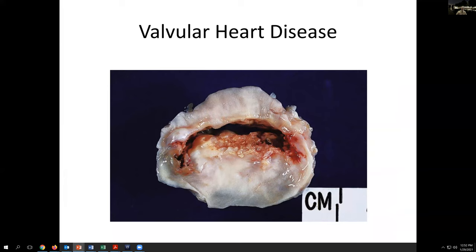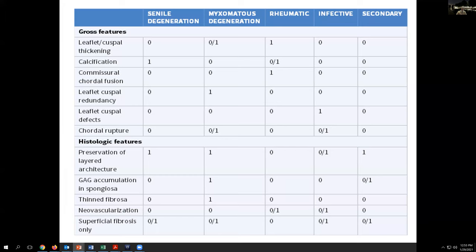Moving on to valvular heart disease — this is a disorder that will frequently cross our surgical bench as cardiac surgery progresses. When describing valve lesions, the major differential includes aging degenerative atherosclerotic change, myxomatous or patulous degeneration, rheumatic heart disease, and infectious or other secondary causes. There's a pretty good differentiation just on the basis of gross evaluation alone. For example, thickening of the leaflets is most frequently seen with rheumatic or myxomatous degeneration, not typically with senile changes.